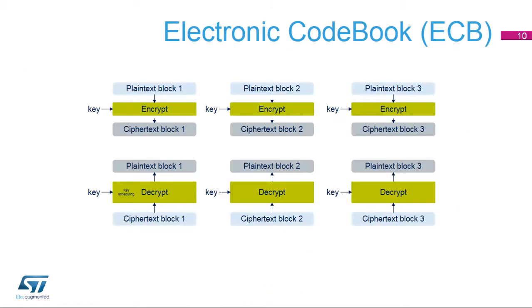ECB is the simplest form of operation. There are no chaining operations and no special initialization stage. The message is divided into blocks, and each block is encrypted or decrypted separately. For an ECB decryption, a key for the first round of decryption must be derived from the key of the last round of encryption. This is why a complete key schedule of encryption is required before performing the decryption.